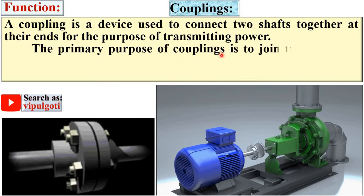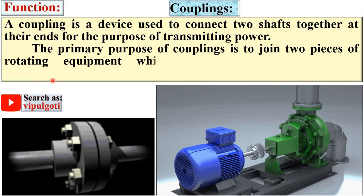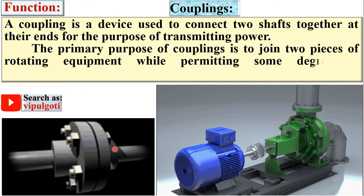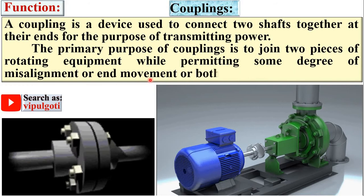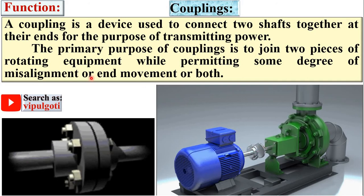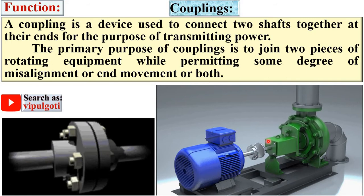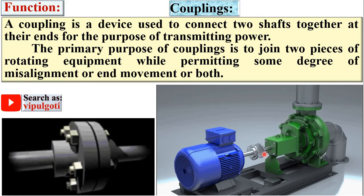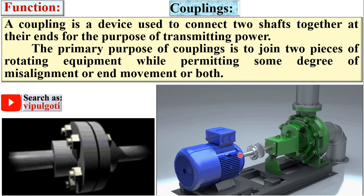The primary purpose of couplings is to join two pieces of rotating equipment while permitting some degree of misalignment — that means both the shafts are not co-linear, or there is end movement, or both. We have also seen the application of couplings at the domestic level while connecting the shaft of an electric motor to the shaft of a centrifugal pump.